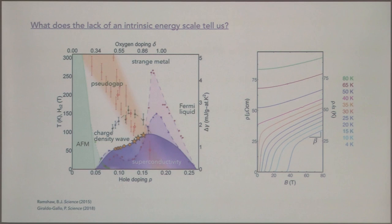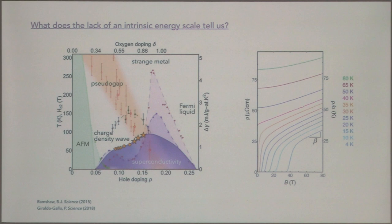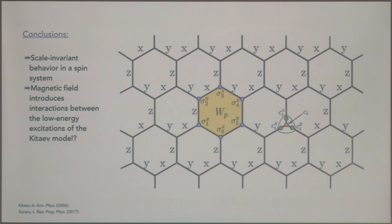We can look to a system that tells us what this actually means. The cuprates show similar behavior in the strange metal state — you can measure magnetoresistance and it has very similar temperature-magnetic-field scaling. What that suggests is that you have very strong interactions in the strange metal state that drive the effective energy scale down to zero. This scale-invariant behavior is a characteristic of strongly interacting systems.